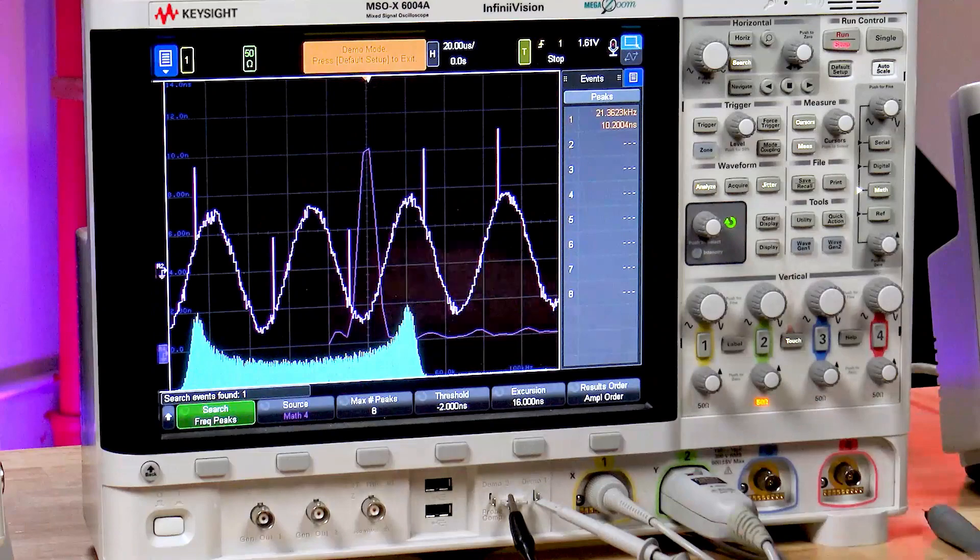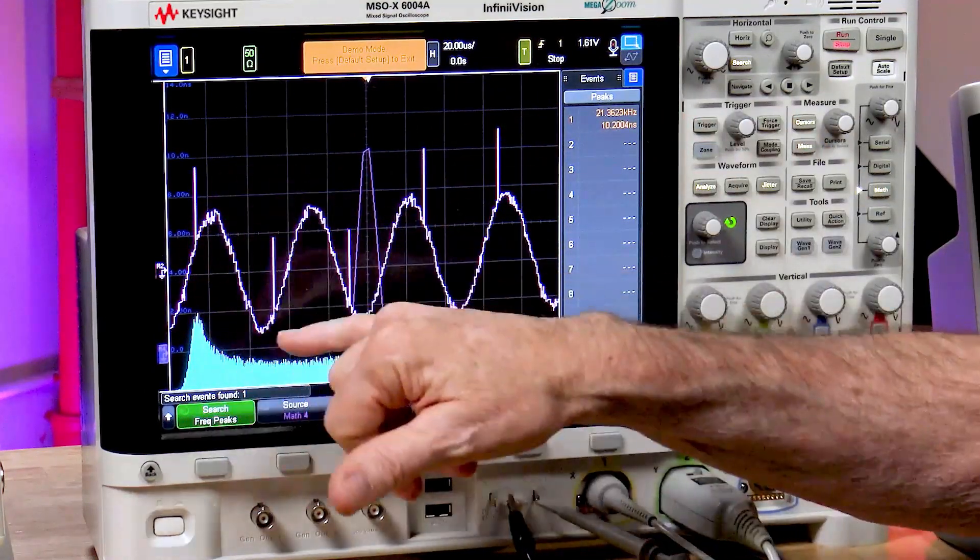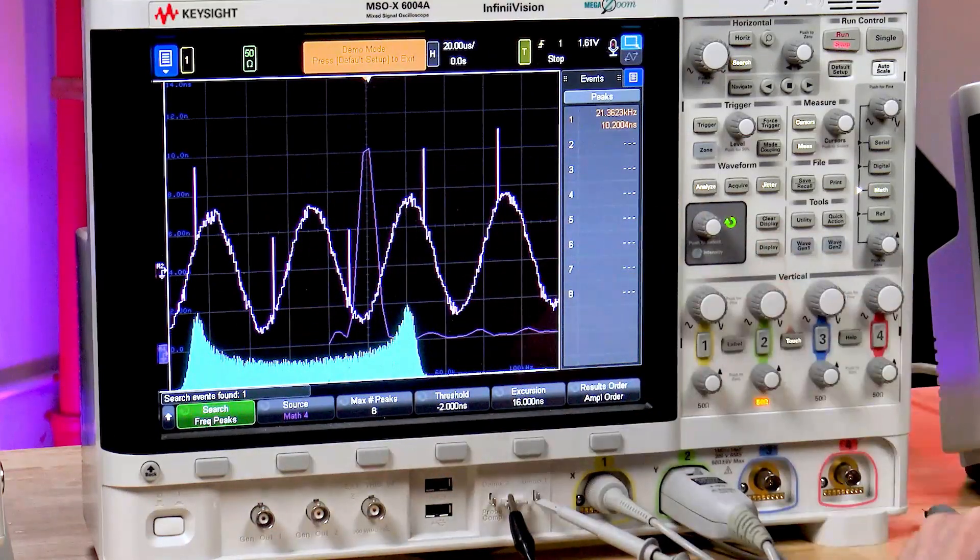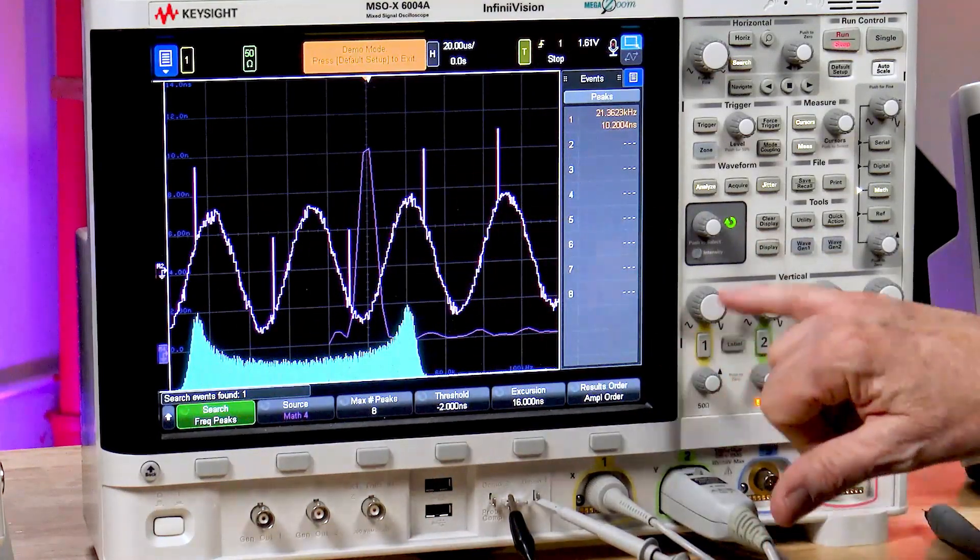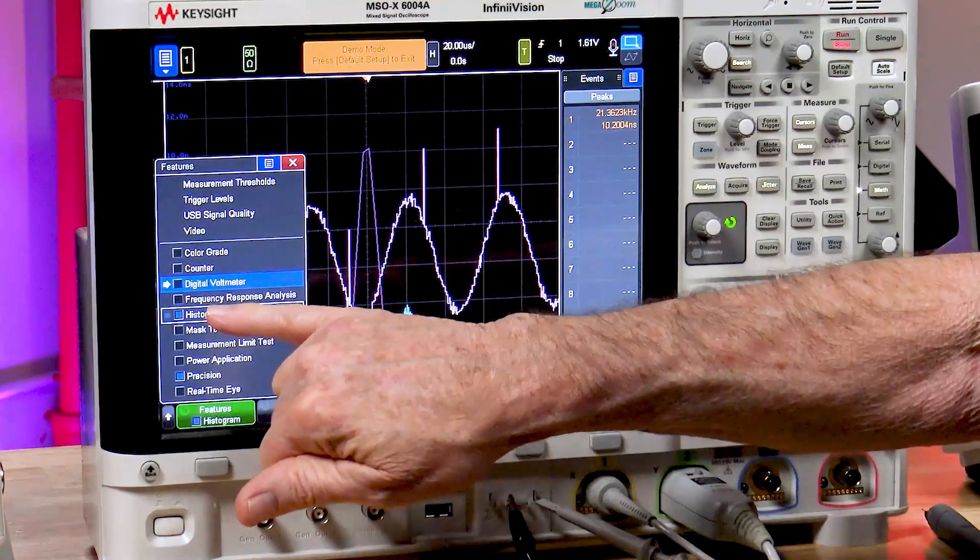Now, we could correlate that 10.4 nanoseconds of jitter back to this measurement trend waveform. And there probably is some correlation. As well as we can go back to the histogram menu.